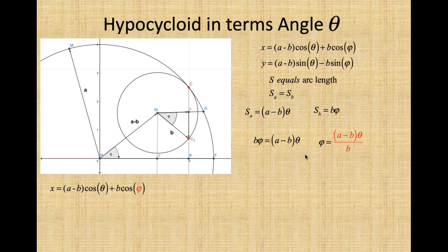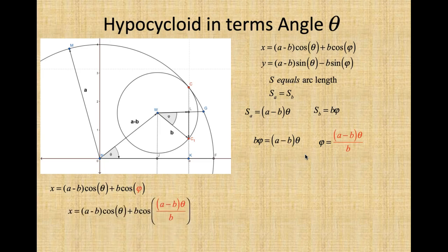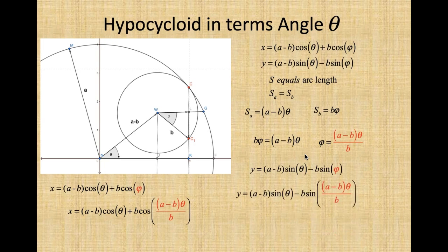And we get phi is equal to (A minus B) times theta divided by B. And since our X is equal to (A minus B) cosine theta plus B times cosine phi, we can substitute phi inside there. And Y, we have the sine phi there. We can substitute phi inside of there.